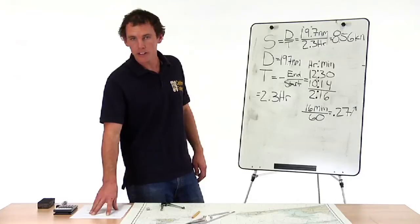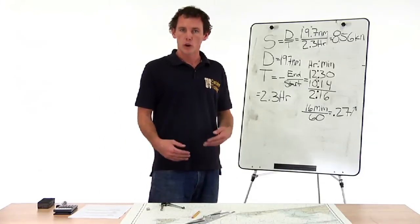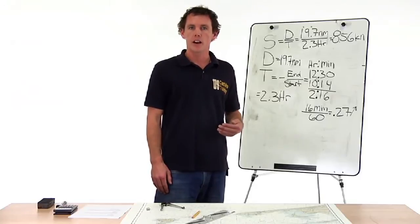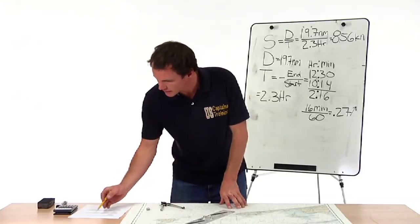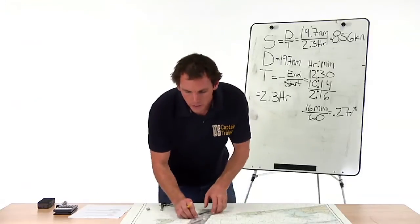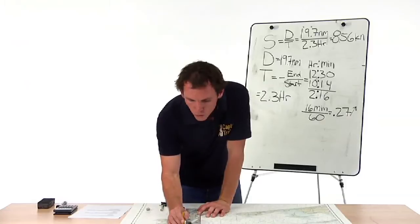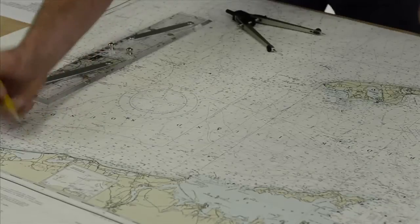In order to find the speed we need a distance and a time. So we'll go on the chart and find our starting position, which is latitude 4120, longitude 7140. It falls where a meridian and a parallel cross. This is our end point.